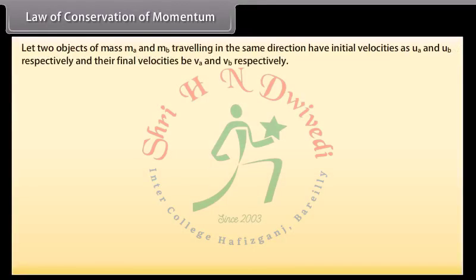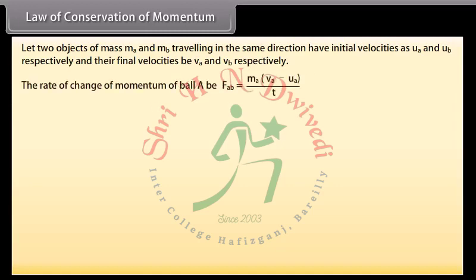Let two objects of mass MA and MB traveling in the same direction have initial velocities as UA and UB respectively, and their final velocities be VA and VB respectively. The rate of change of momentum of ball A, FAB, which is equal to MA into VA minus UA upon T.